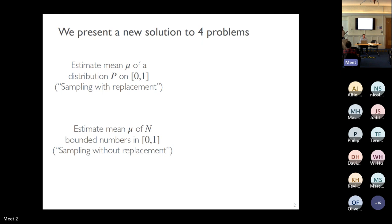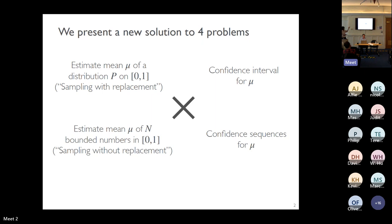There are two estimation approaches: confidence intervals — a standard (1-alpha) interval for mu — and confidence sequences for mu. The paper addresses all permutations: confidence intervals and sequences for both the with-replacement and without-replacement settings, forming one unified framework for all four problems.